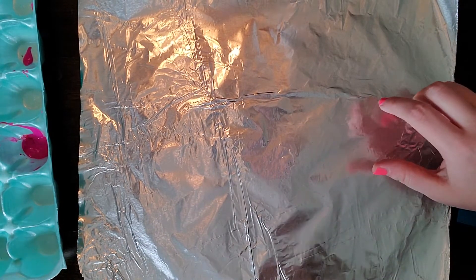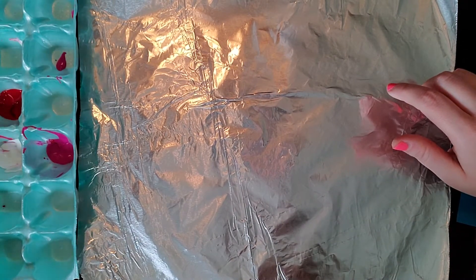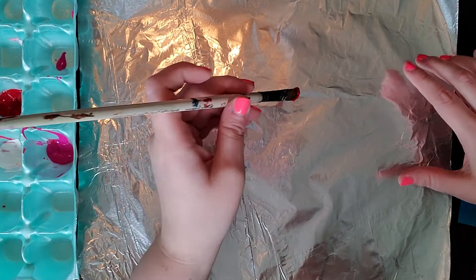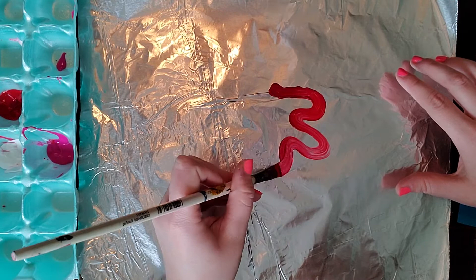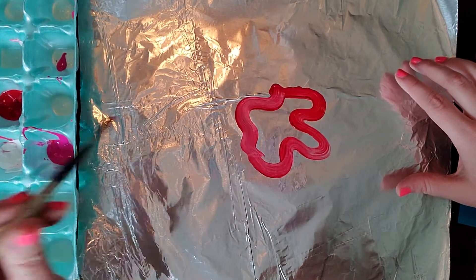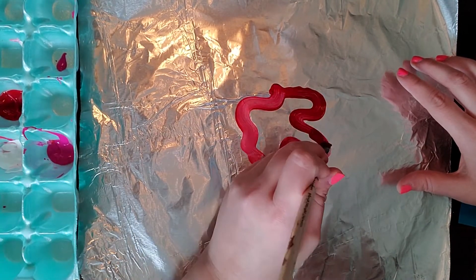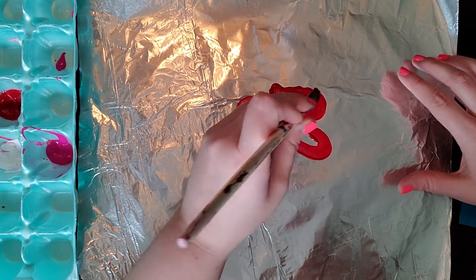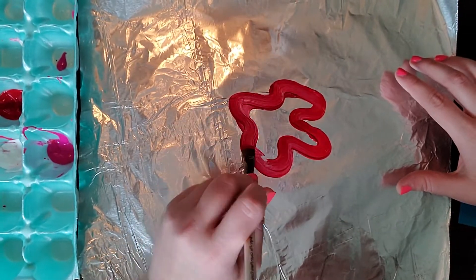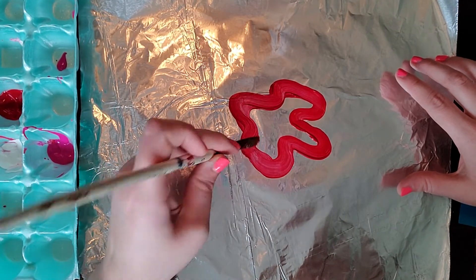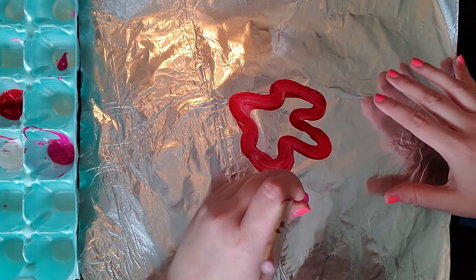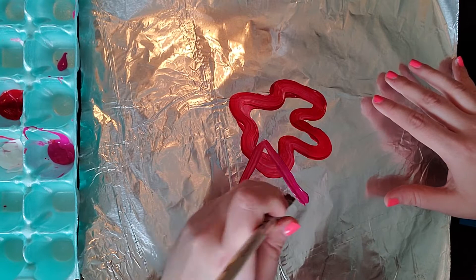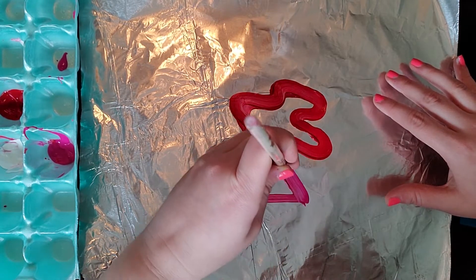So what you're going to do is you're going to take your paint and put it on your tinfoil. Now, the key here is you want to find a happy medium. So by that, I mean you don't want it too dry, and you don't want it too globby with paint either. You kind of want to just get a really nice, even coverage with your paint.